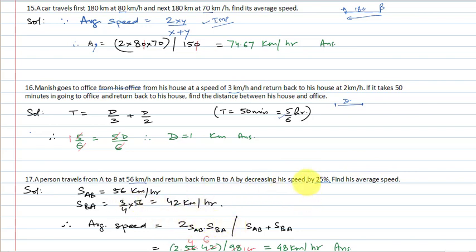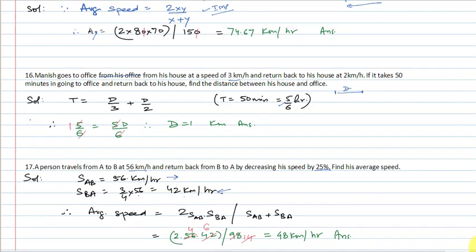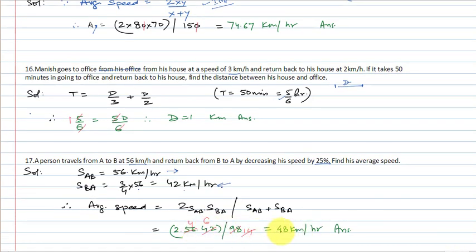He decreases speed by 25%, meaning his return speed is 75% = 3/4 of original speed. So return speed = 3/4 of 56 = 42 km per hour. Going speed is 56, return speed is 42. Average speed = 2 × 56 × 42 / (56 + 42) = 4704/98 = 48 km per hour. This is similar to question 15.